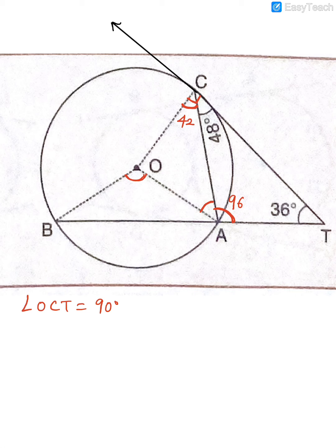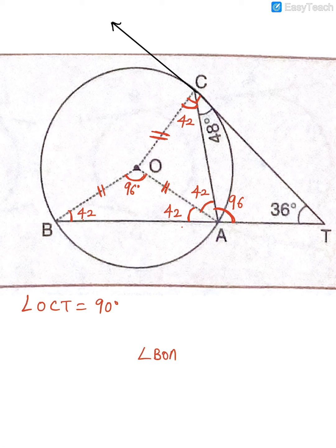Because radii of a circle are equal, the base angles of the isosceles triangle are both 42°. Using angles on a straight line summing to 180°, we find another angle is also 42°. Again using equal radii, we get 42 + 42 = 84°, so the remaining angle = 96°. Therefore, angle BOA = 96°.